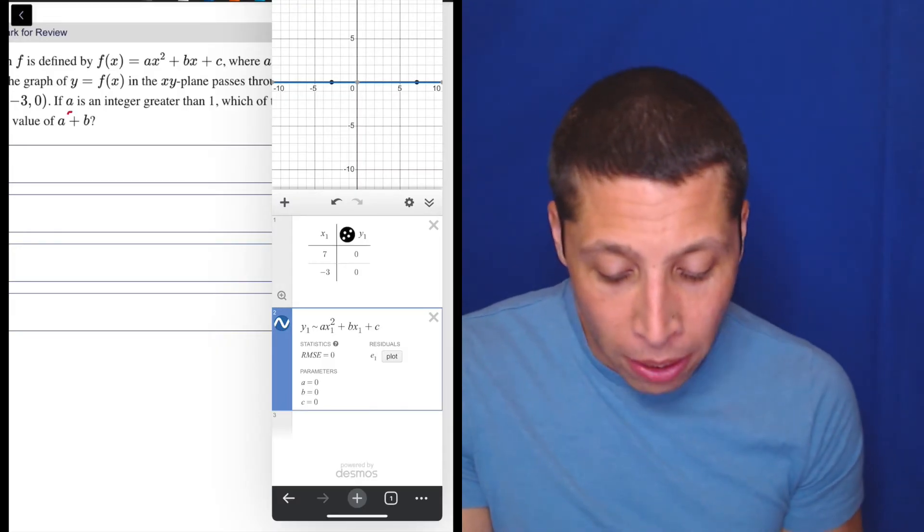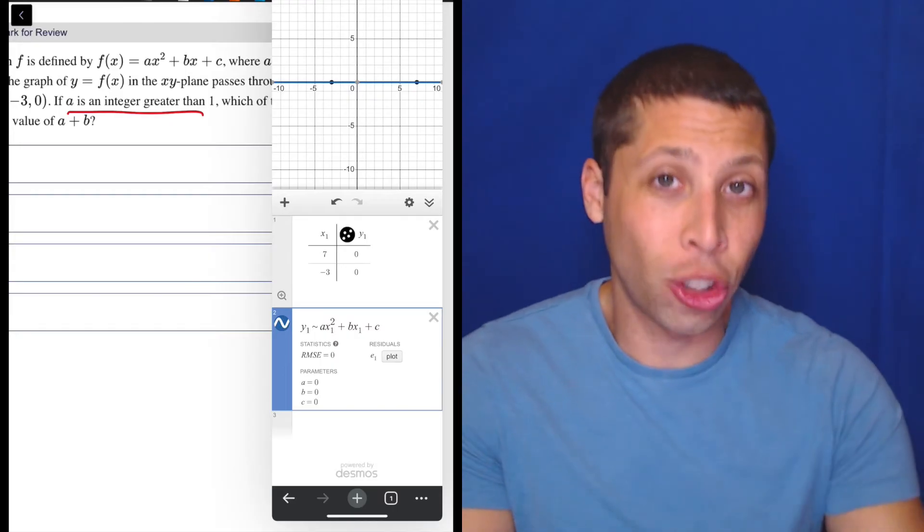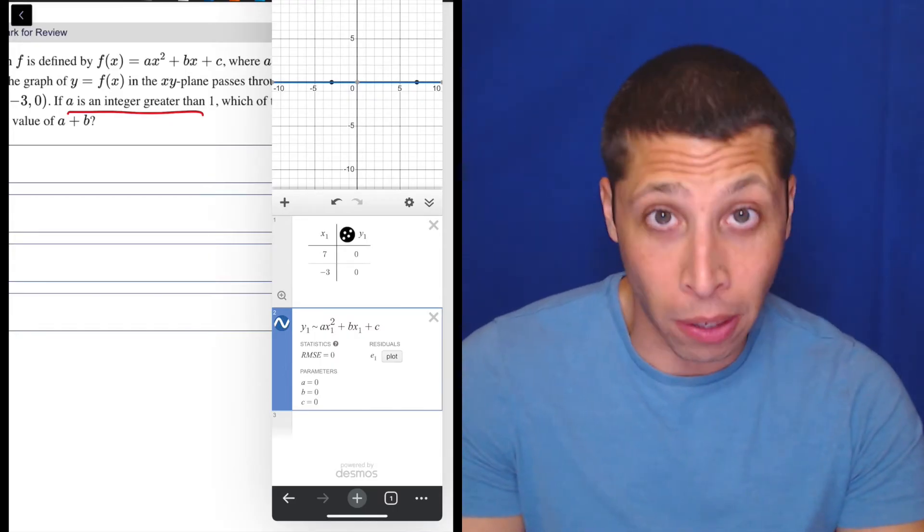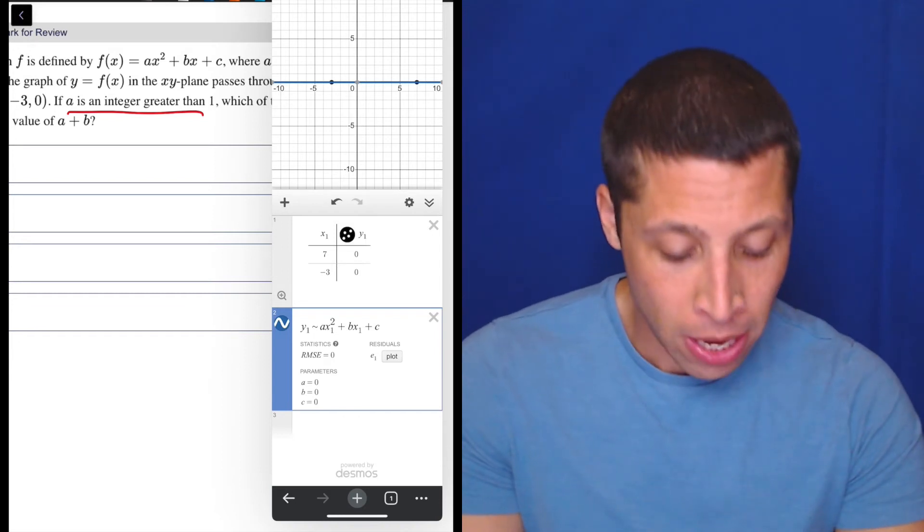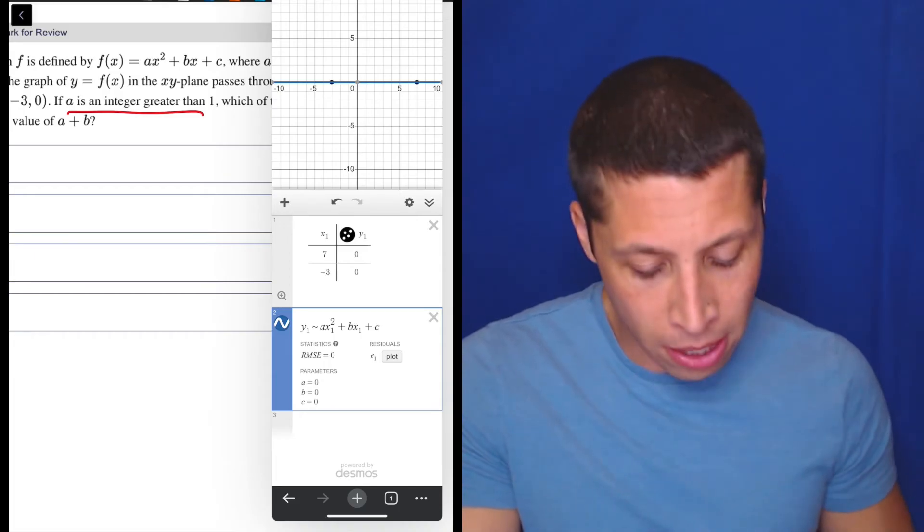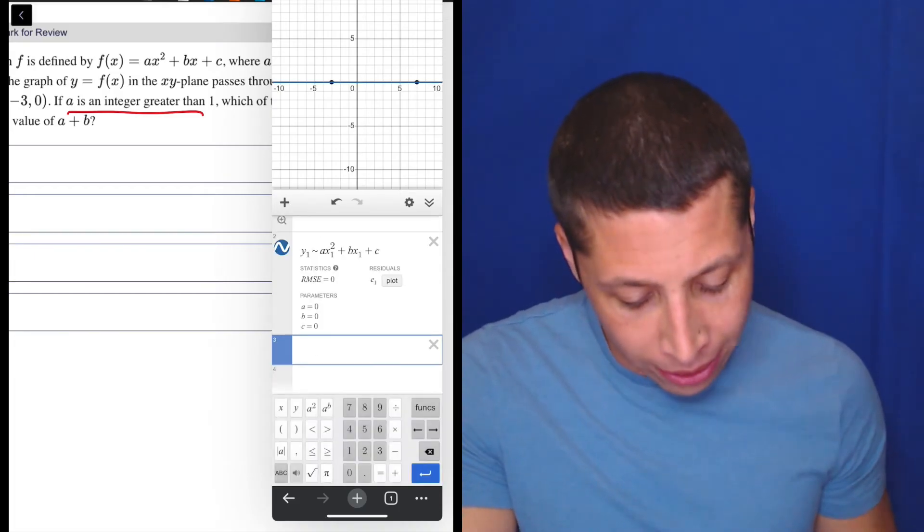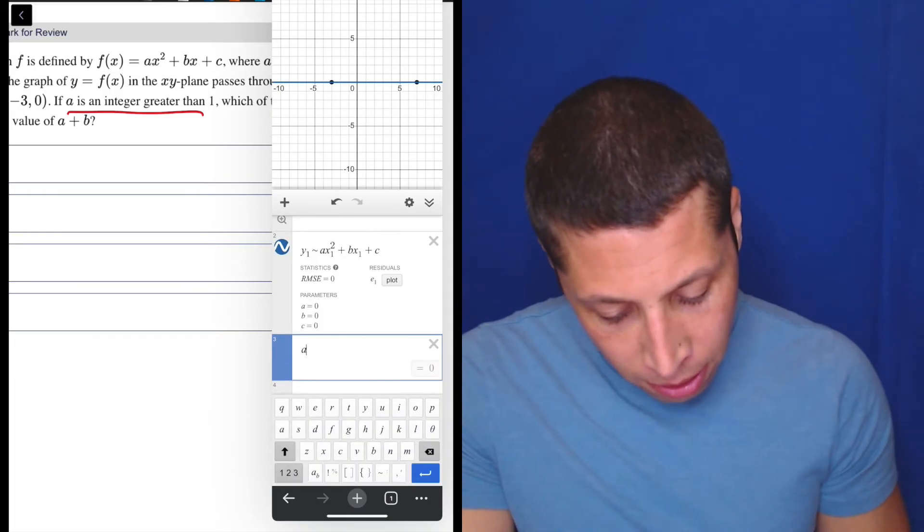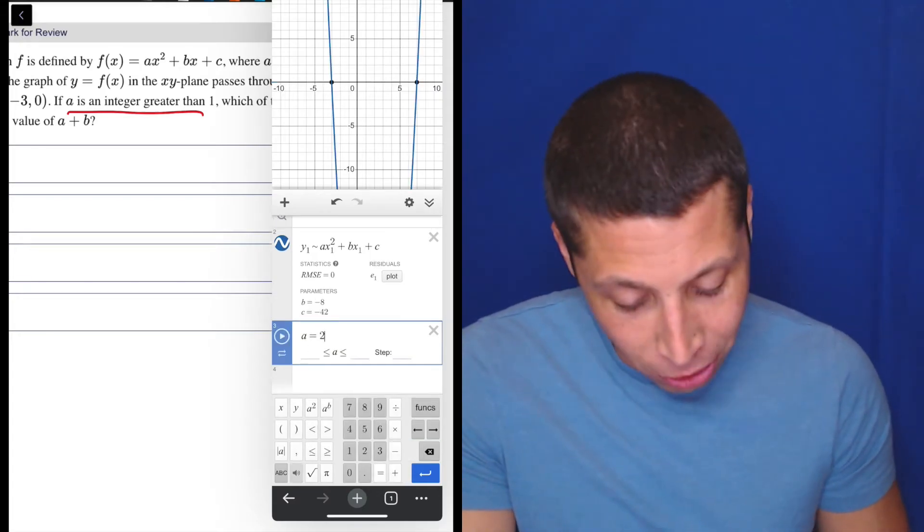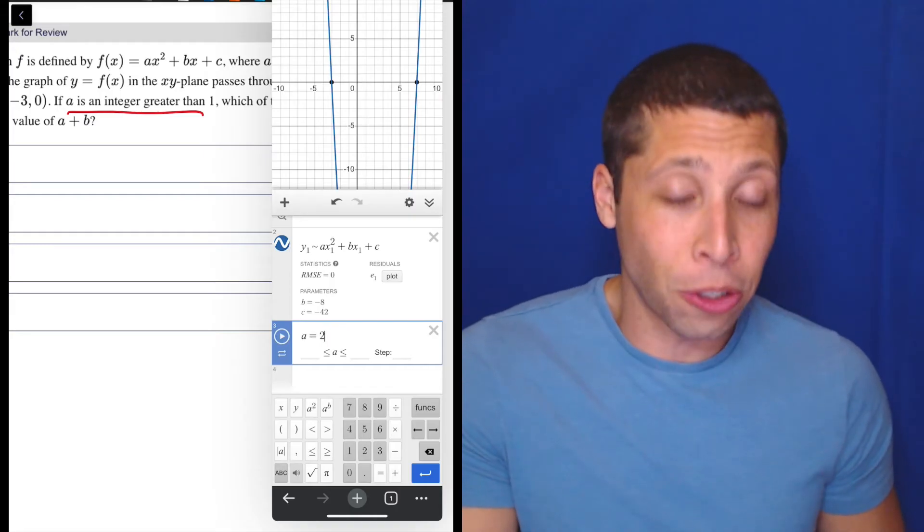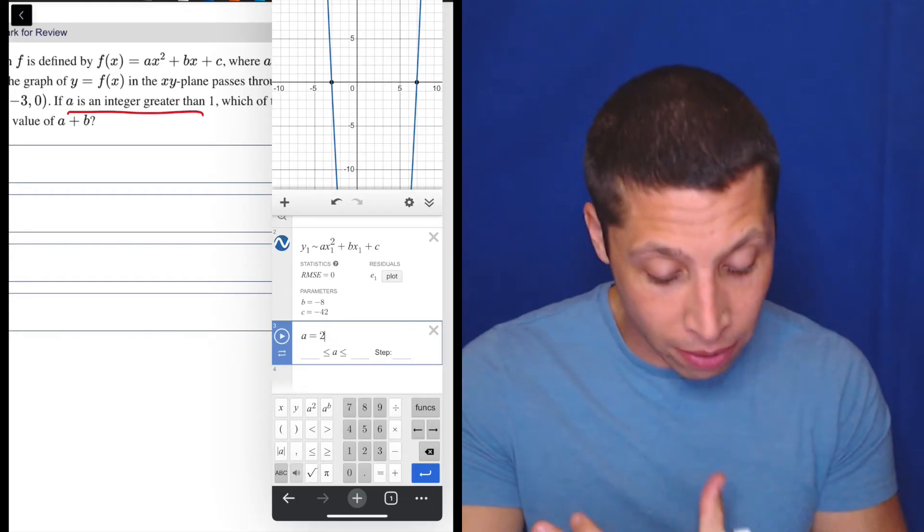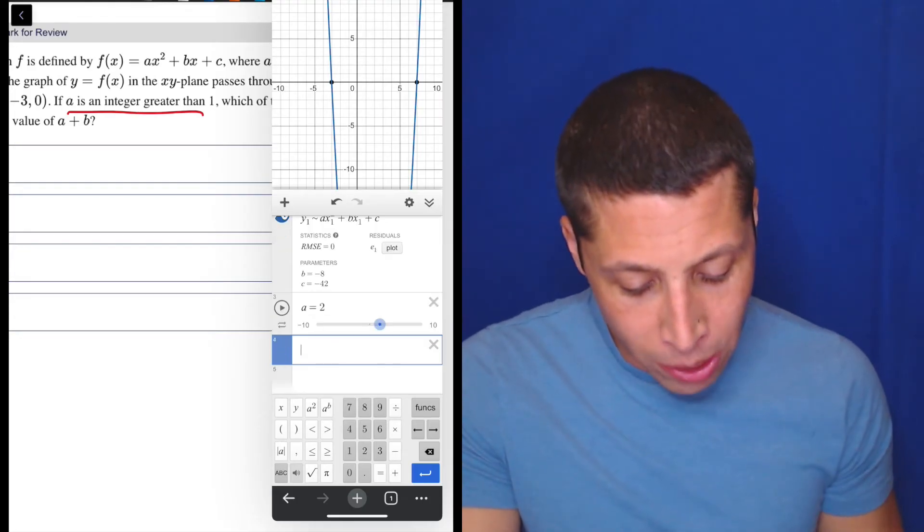But we do have a condition that we can help kind of change this a little bit, right? We know that A is supposed to be an integer greater than one. So zero is not greater than one. So that's not going to work. So there might be other ways to integrate that information into our process here. But we could also just tell it that, okay, A is, let's make it an integer greater than one. What's the obvious guess here? How about two?